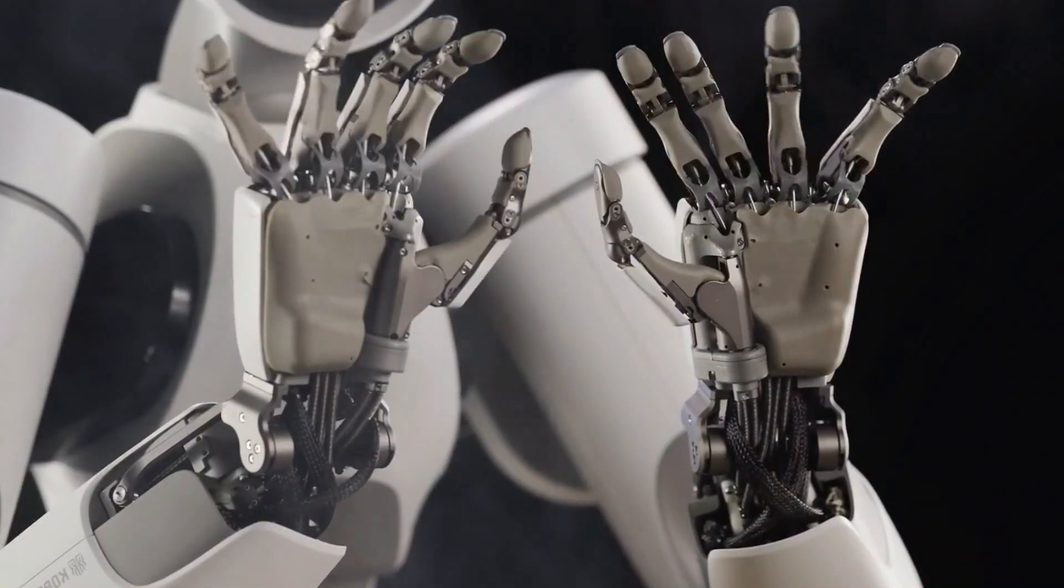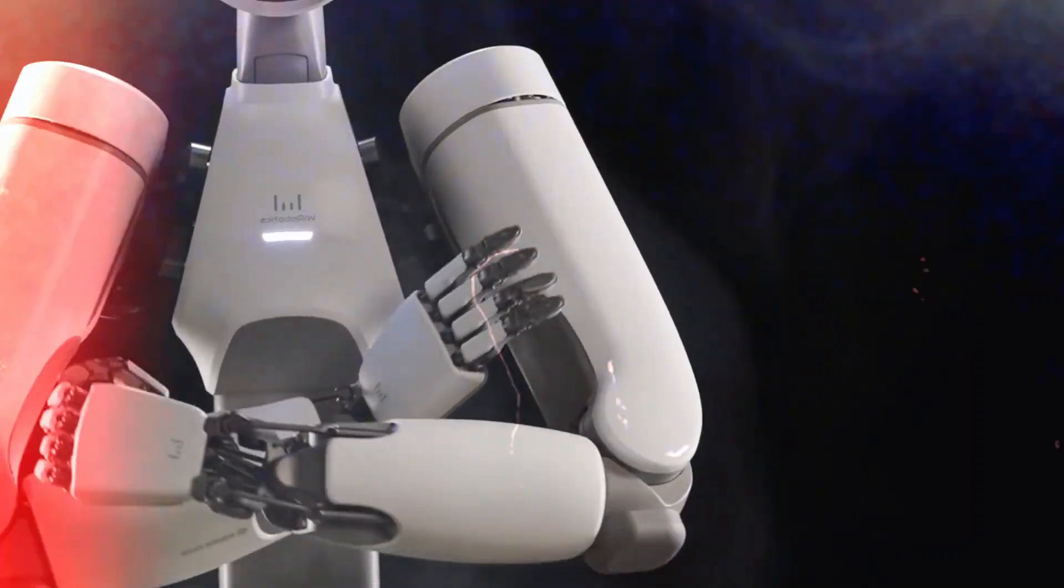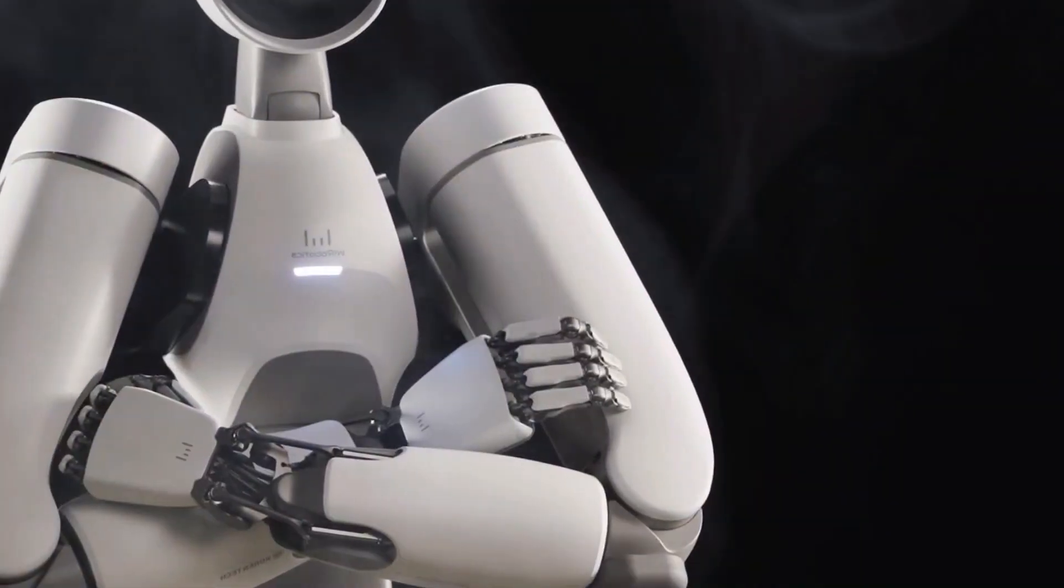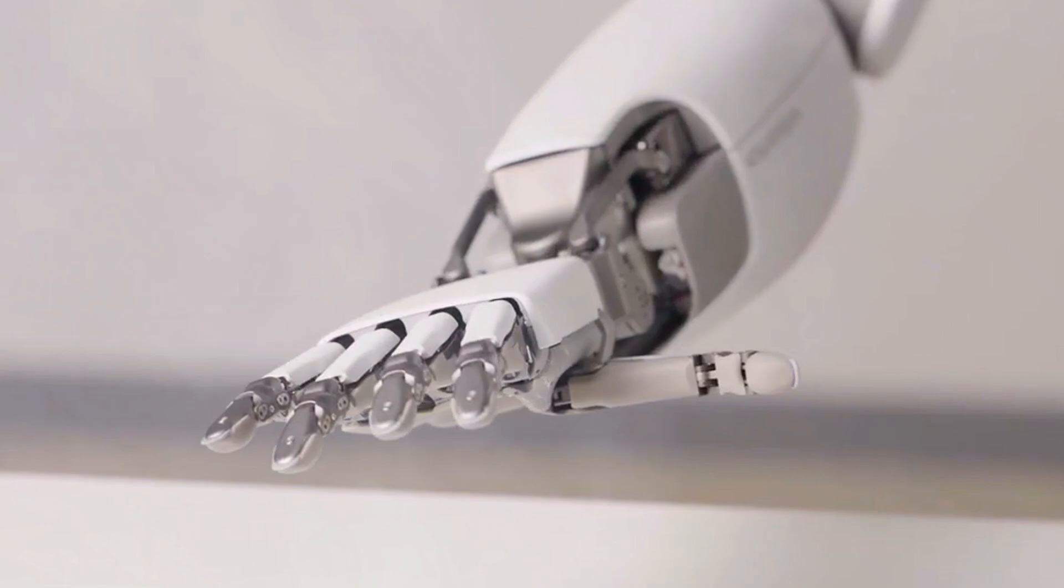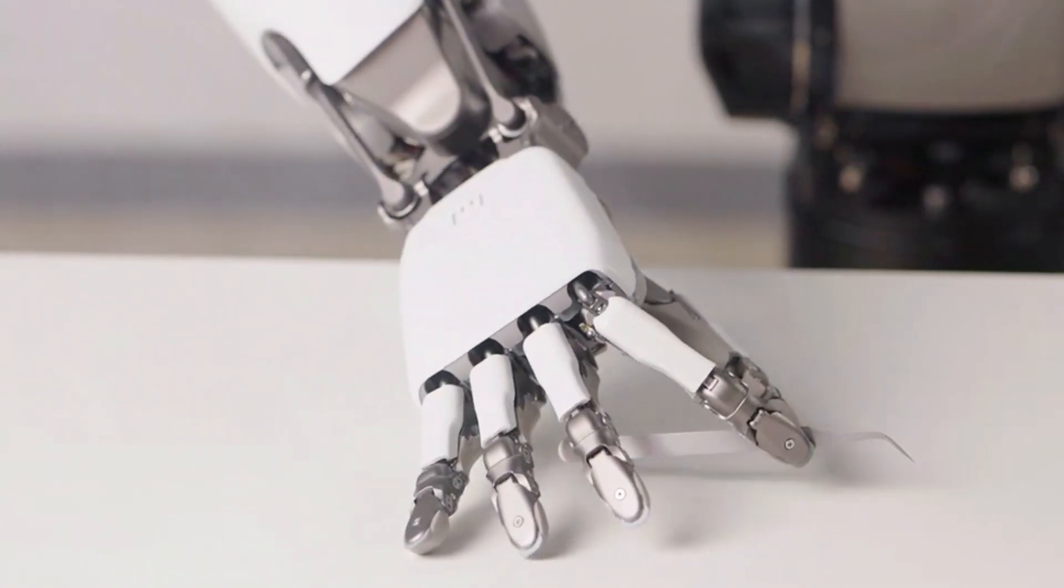We're talking fingertip control so sensitive it can detect the weight of a flower petal, but also grip strong enough to lift a 30kg load. That balance is something humans take for granted, but for robots, it's almost unheard of.